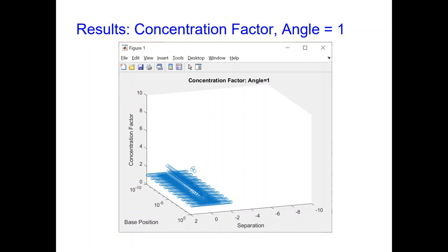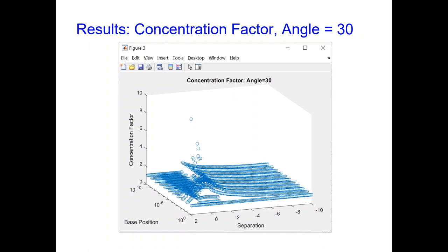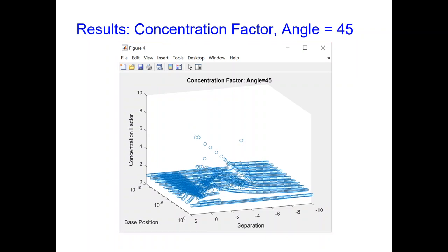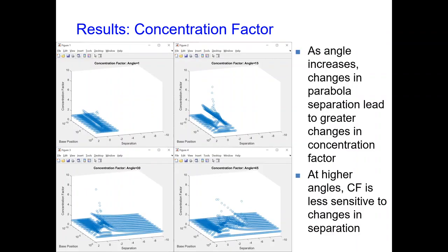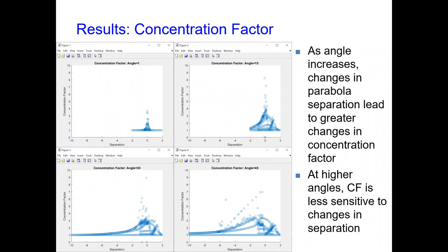These next slides show the concentration factor, which is obtained by multiplying the light collection ratio with the top-to-base ratio. This is shown for angles of 1, 15, 30, and 45 degrees. As the angle increases, changes in parabola separation lead to greater changes in concentration factor. Additionally, at higher angles, the concentration factor is less sensitive to changes in separation. The same graphs are also shown from a different view, from which it is easier to see how separation affects the concentration factor.